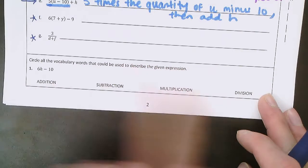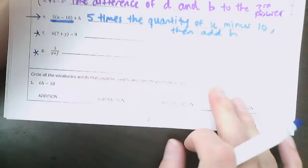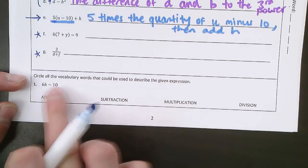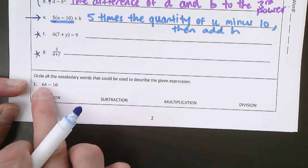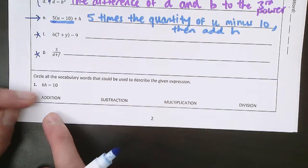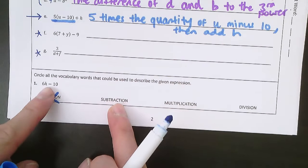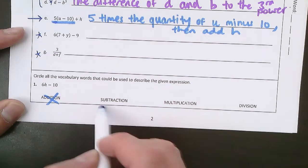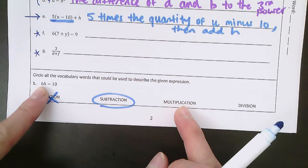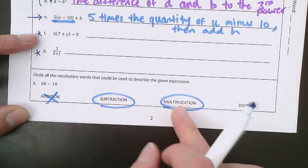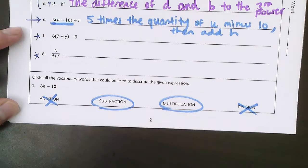The last thing I want to show you is this example on the bottom, because this is what you're going to do on your daily task. It says to circle all the vocabulary words that could be used to describe this expression: 6h minus 10. So 6h — remember that's 6 times h, so we have multiplication — and then minus 10. Do we have any addition? No, we do not, so cross that out. Subtraction? Yes, there's a minus sign right there. Multiplication? There's no multiplication sign, but 6h is the same as 6 times h, which is multiplication. Division? No division signs, no fraction bars — there's no division. That's how you do these problems, and you'll do that as part of your daily task today.